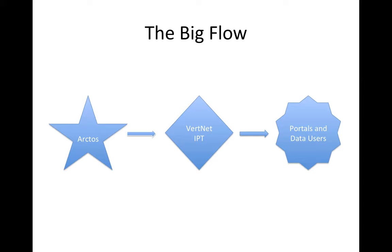Unless you're seeing that your data on the back end — in the portal side of things — doesn't look right, in which case you need to let me, Dusty, or Lamb know. Generally speaking, your data is in Arctos, or will be soon, and it moves from Arctos to the VertNet IPT, and from the IPT it goes to the portals and data users. It's a pretty straightforward three-step process.